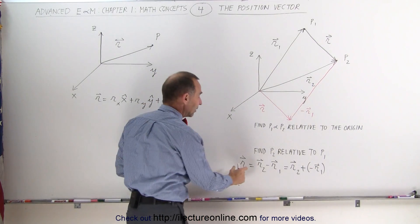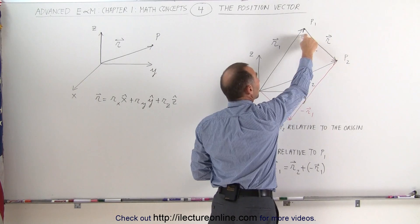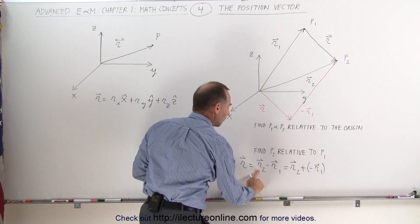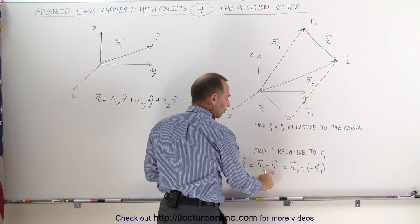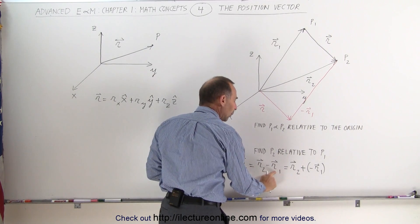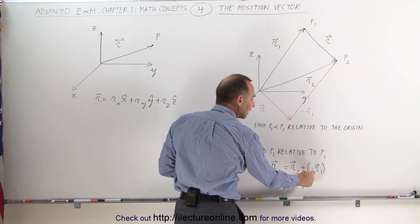That shows that, yes indeed, to find the position vector for point 2 relative to point 1, we take the position vector relative to the origin of point 2, and subtract from that the position vector of point 1 relative to the origin. And that's the same as taking r2 plus the negative of r1.